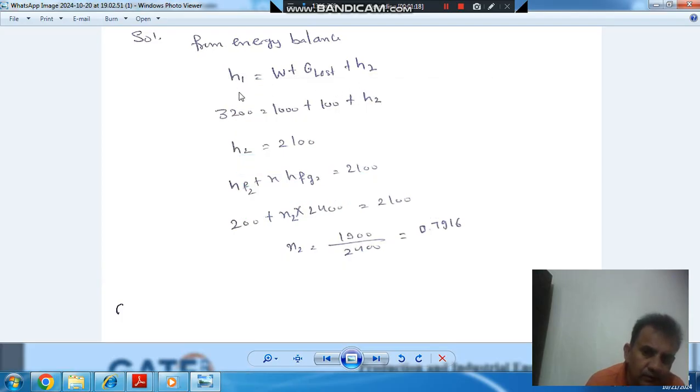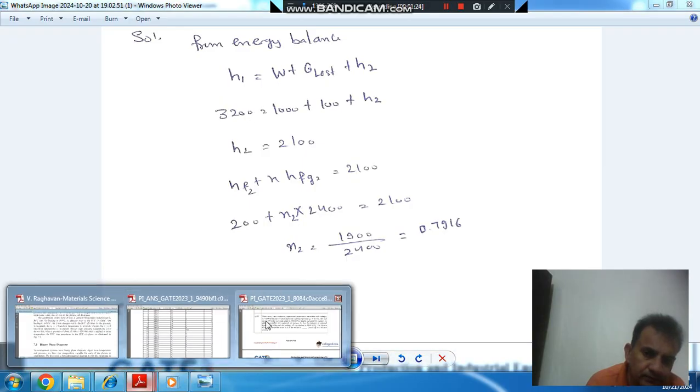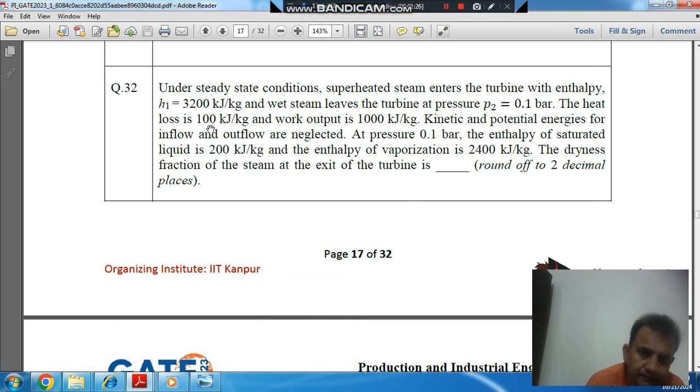So inlet enthalpy is 3200 kilojoules per kilogram, work done is 1000, and heat loss is 100 per kilogram. Therefore h2 comes out as 2100 kilojoules per kilogram.